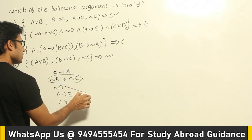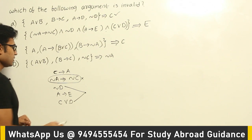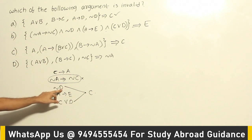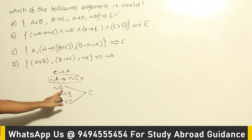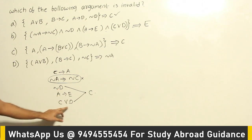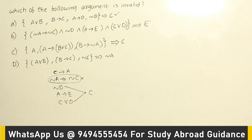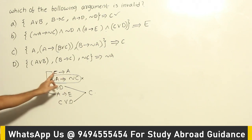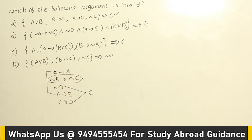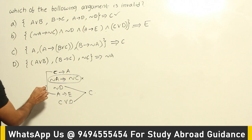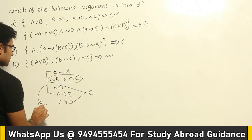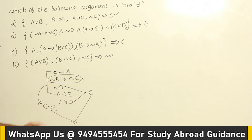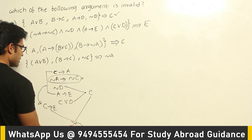Now using the premise C or D and negation D: since D is false, if C or D has to be true then C must be true — by disjunctive syllogism. Now with C implies A and A implies E, we can apply the transitivity rule: C implies A, and A implies E, gives us C implies E. Combining C with C implies E by modus ponens, the conclusion is E.